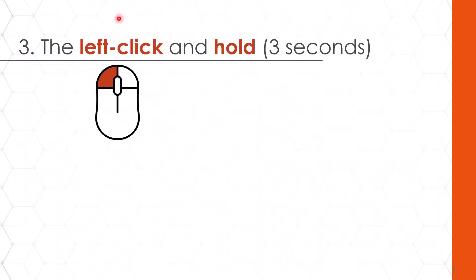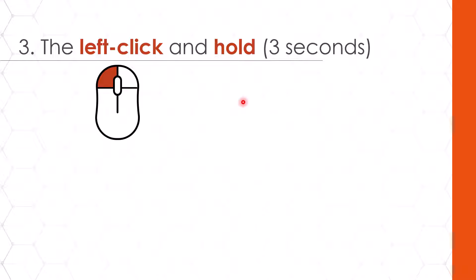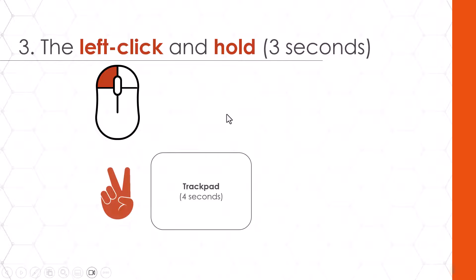A third way to change your mouse cursor into a laser pointer is to left-click and hold for three seconds — one, two, three Mississippi. You cannot move your mouse cursor around while you're holding; you need to pause and hold for three seconds, then it becomes a laser pointer. You need to continue holding down the left-click button to move it around. You can also use this with your trackpad by holding two fingers down for about four seconds, after which your cursor becomes the laser pointer and you can use one finger to move it around.